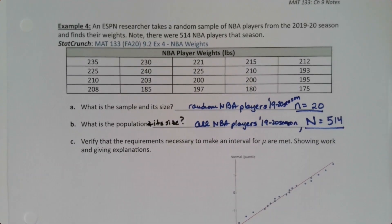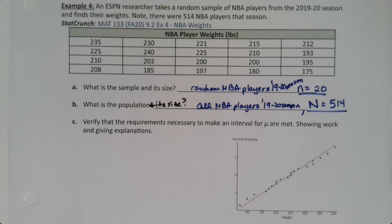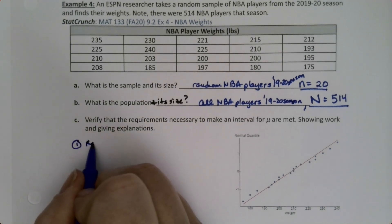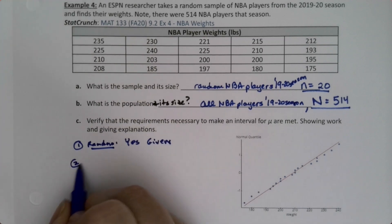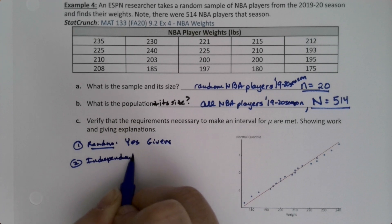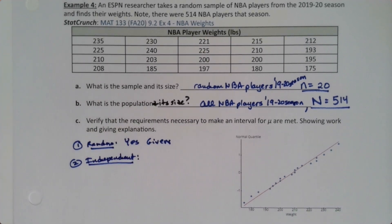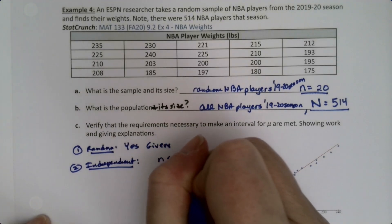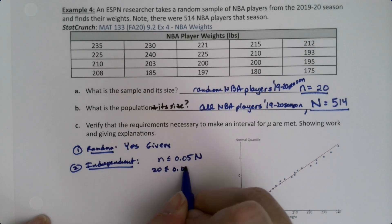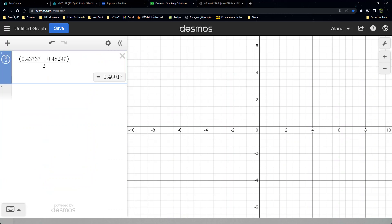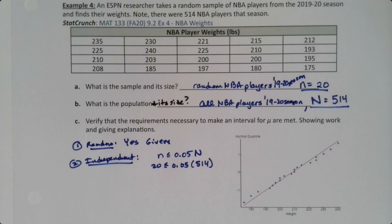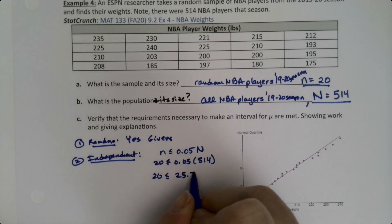Now we want to verify the requirements needed to make this interval. First is always random — that's given, so that's easy. For independence, our population size is not super large, so we actually have to check this time. We need little n to be less than 0.05 times capital N, so 20 must be less than 0.05 times 514. Using Desmos, 0.05 times 514 is 25.7, and 20 is less than 25.7, so yes.